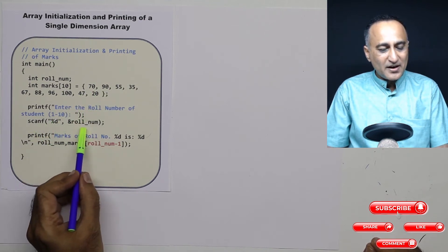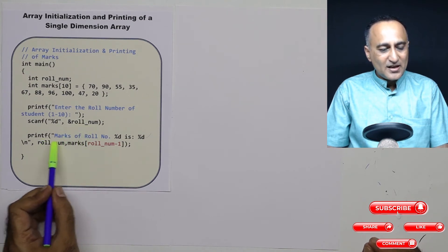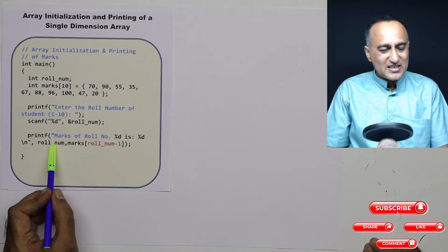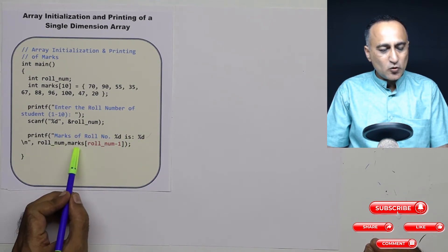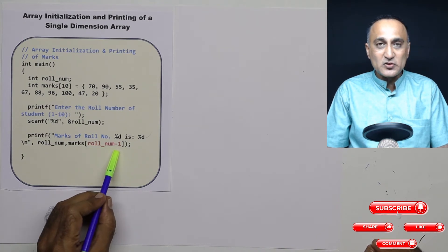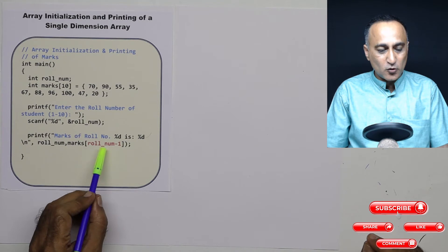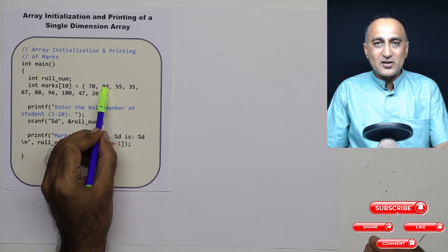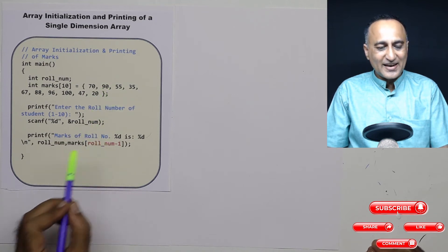So what I am doing is I am reading the roll number into a variable called roll_num. Then marks of roll_num, let's say roll number 2, is equal to marks of roll_num minus 1. I am doing roll_num minus 1 because I am starting from 0. So 2 minus 1 is 1, marks of 1 is 90. So marks of student roll number 2 is 90.